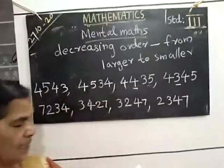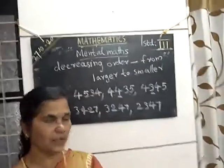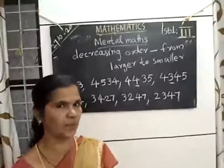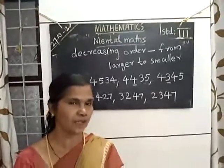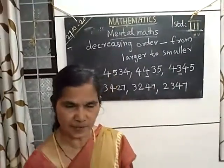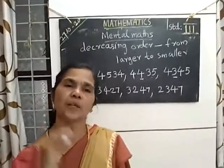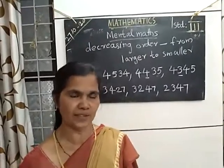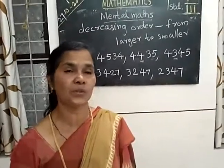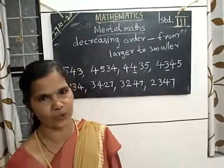Like that, you compare the thousands place first. If the thousands places are the same, you compare the hundreds place. If the hundreds places are the same, you compare the tens place. If the tens place is also the same, you compare the ones place. That's all.